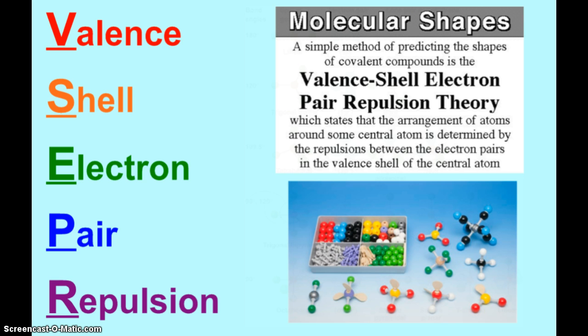When we make a single covalent bond, we have the nucleus of one atom attracted to the electron cloud of the other. But those electron clouds repel each other, as do the nuclei. And so we end up seeing this thing called the valence shell electron pair repulsion theory. And this VSEPR theory, as you see up here, is a simple method of predicting shapes of covalent compounds. The arrangement of atoms around some central atom is going to be determined by the repulsions between the electron pairs in the valence shell of the central atom.